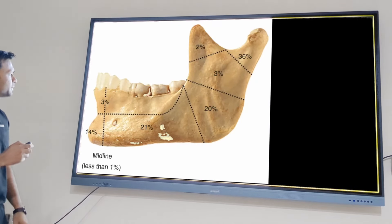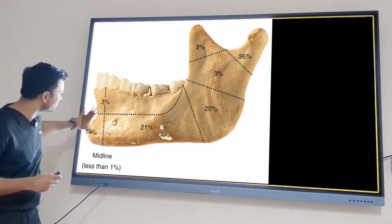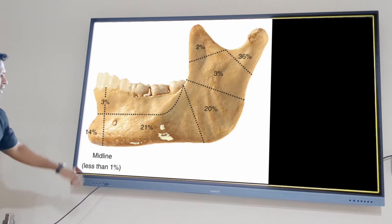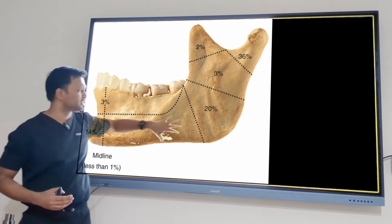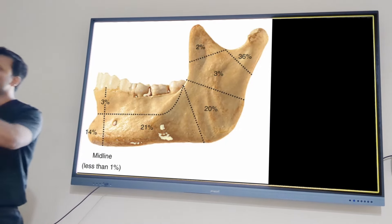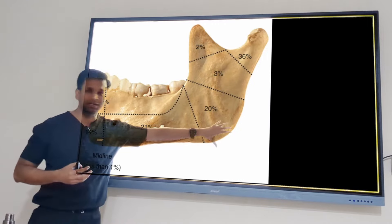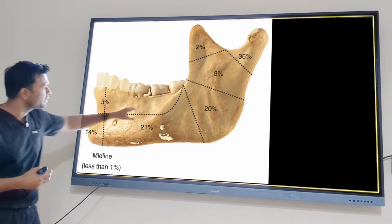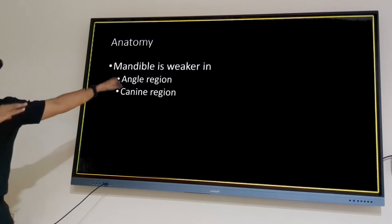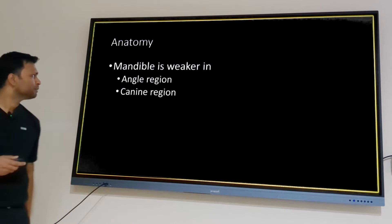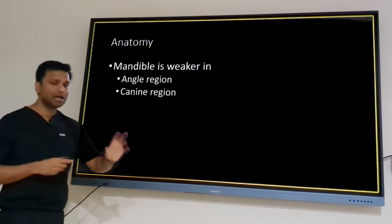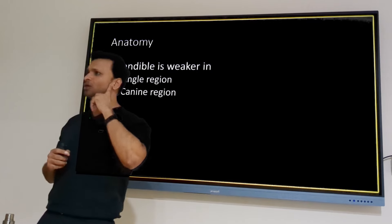The body of the mandible is horizontal and the ramus is almost perpendicular to it, creating a sharp angle. Any area with a sharp angle is a concentration point for force applied to the mandible. Additionally, the mandible is weakest in the condylar neck region, and is also weak in the angle and canine regions.